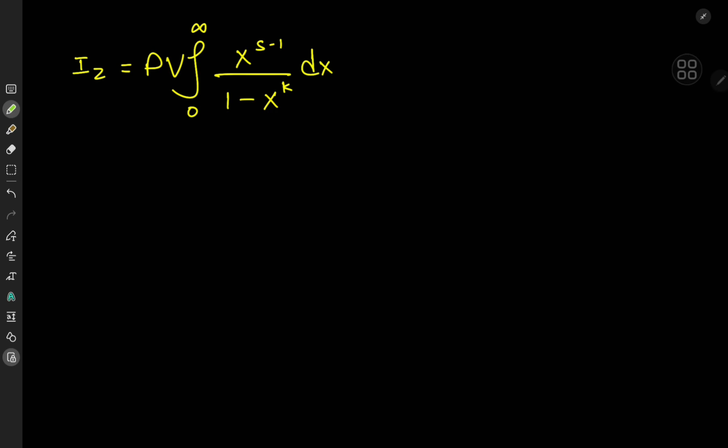For I sub 2 we have the integral from 0 to infinity of x to the s minus 1 divided by 1 minus x to the k, dx. Now this integral converges only in the principal value sense, so just keep in mind that the entire solution development is within the context of the principal value of this integral. I'm not going to be writing 'principal value' for every single step, but that's the entire context here.